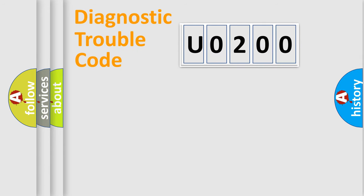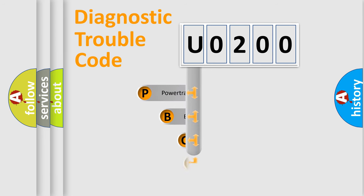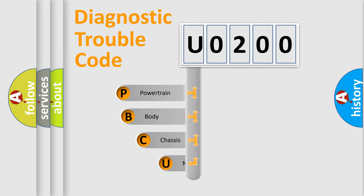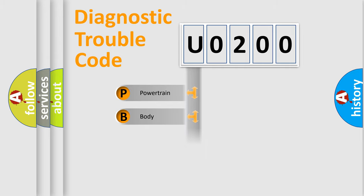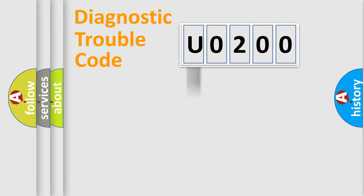Let's do this. First, let's look at the history of diagnostic fault code composition according to the OBD2 protocol, which is unified for all automakers since 2000. We divide the electric system of an automobile into four basic units: Powertrain, Body, Chassis, and Network.